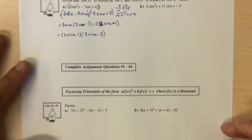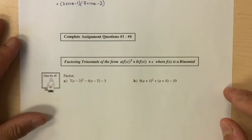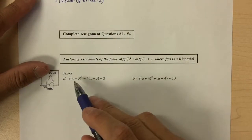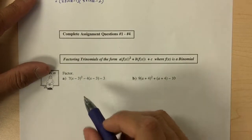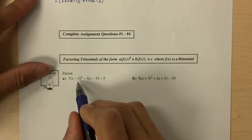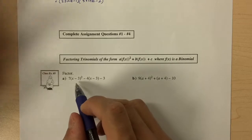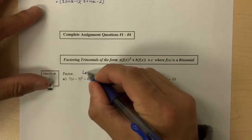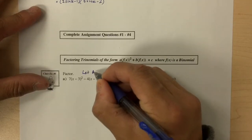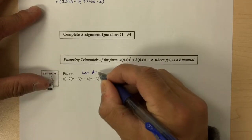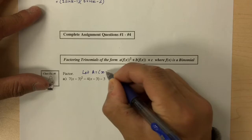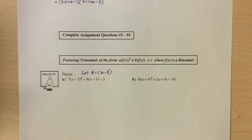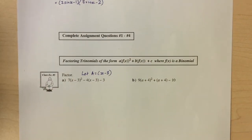The last question involves factoring expressions like this completely. All we have to do is let A equal X minus 3, or in another case let A equal X minus 1, and then factor using either method.